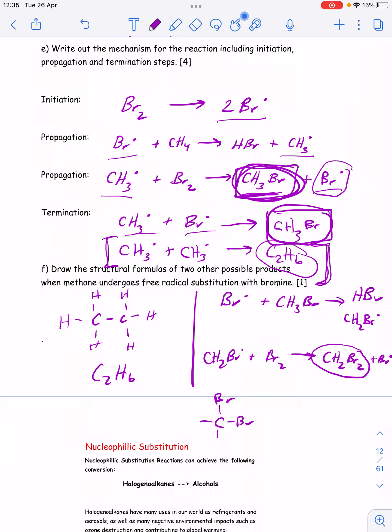In terms of answering this question, we could draw this, and that would satisfy a structural formula of another possible product. But it's possible to continue to substitute hydrogen with bromine up to tetrabromomethane in this example. That's one of the ideas of the free radical substitution. It takes place.